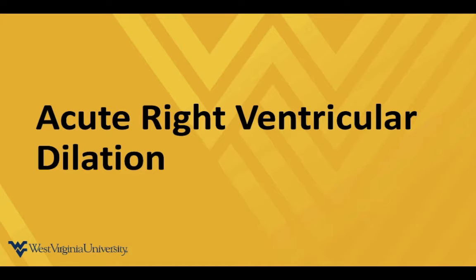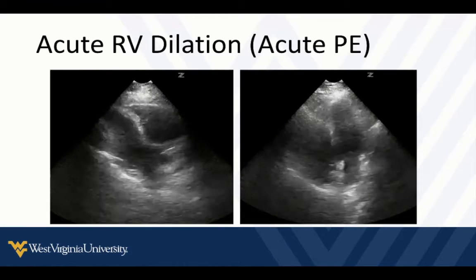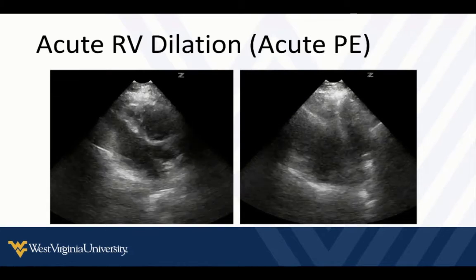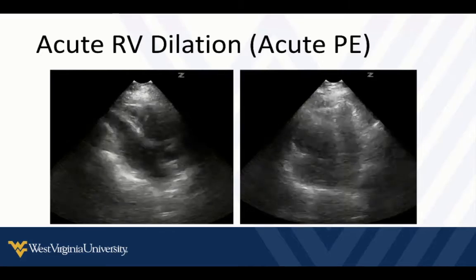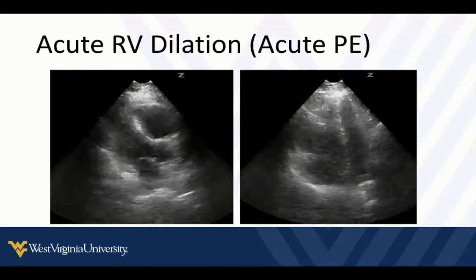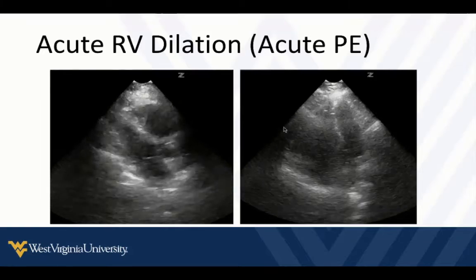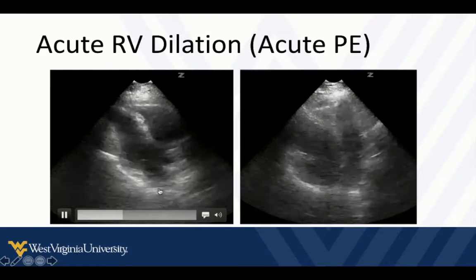The next thing we're going to talk about is the acute dilation of the right ventricle and what those findings can look like. Just like with everything, the more we see normal, the more we get our brains wrapped around what normal looks like, then abnormal findings will pop out at us and be obvious.